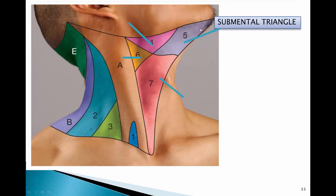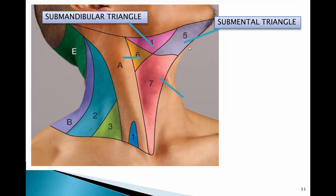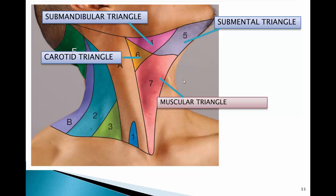The anterior triangle has four subdivisions. The submental triangle is an unpaired triangle bounded by the anterior bellies of the digastric and the hyoid bone. The submandibular triangle is bounded by the inferior border of the mandible and the anterior and posterior bellies of the digastric. The carotid triangle is bounded by the posterior belly of the digastric, the sternocleidomastoid, and the superior belly of the omohyoid. The muscular triangle is bounded by the midline of the neck, the sternocleidomastoid, and the superior belly of the omohyoid.